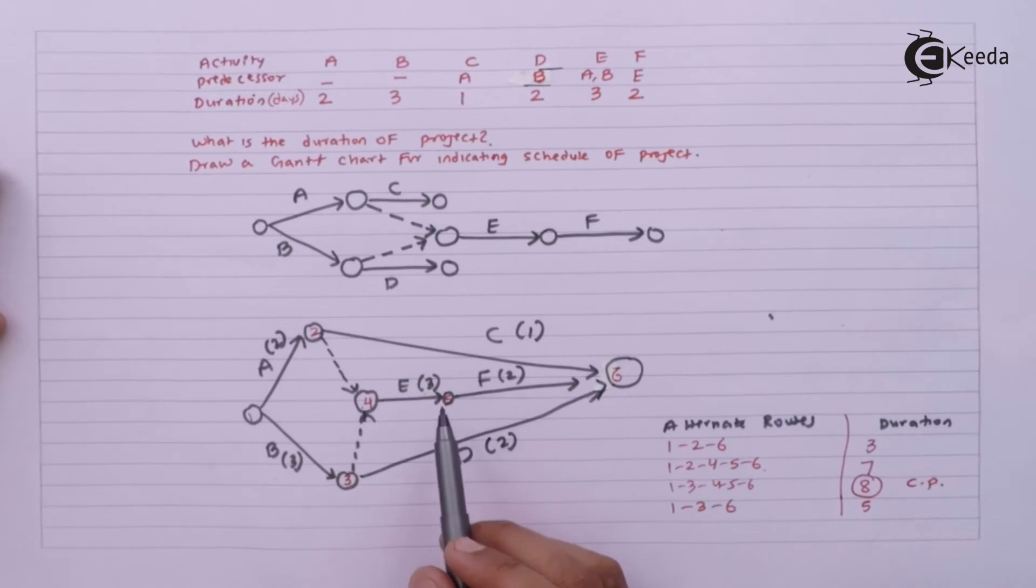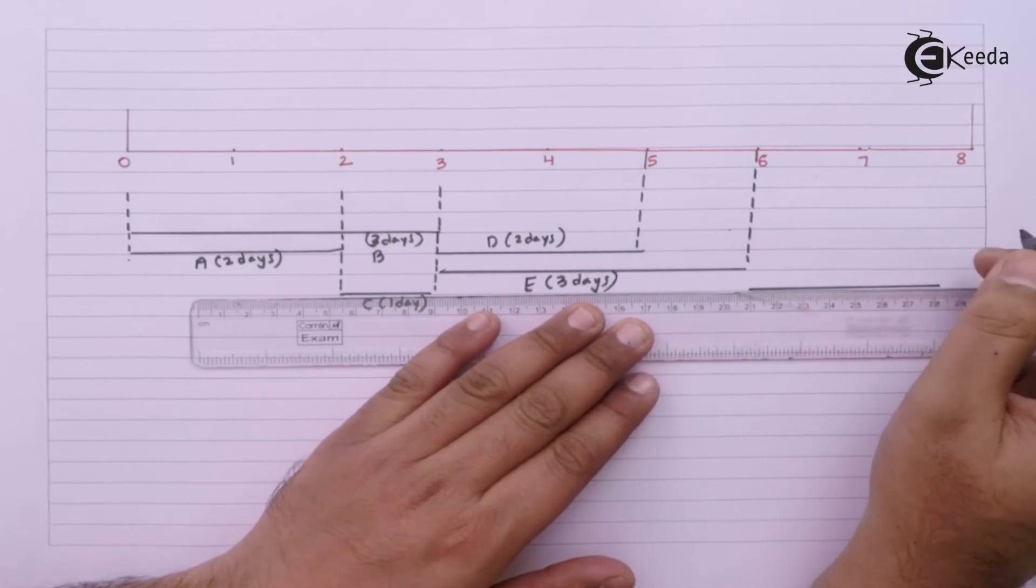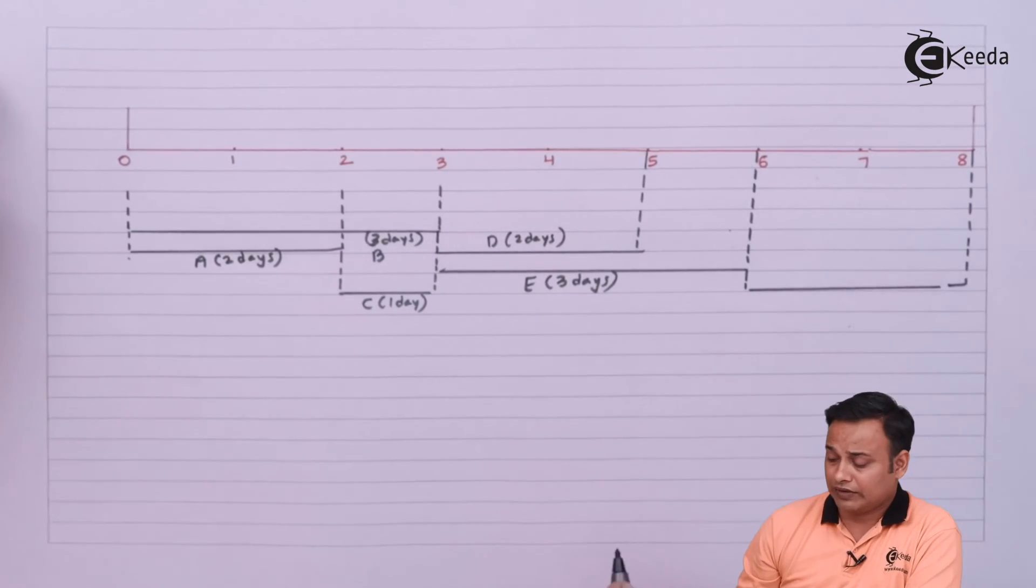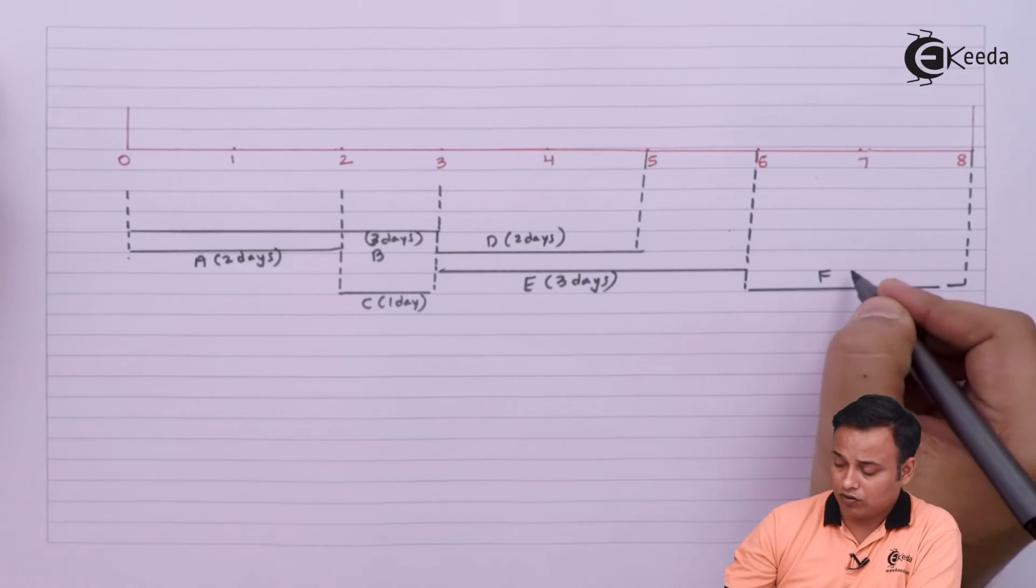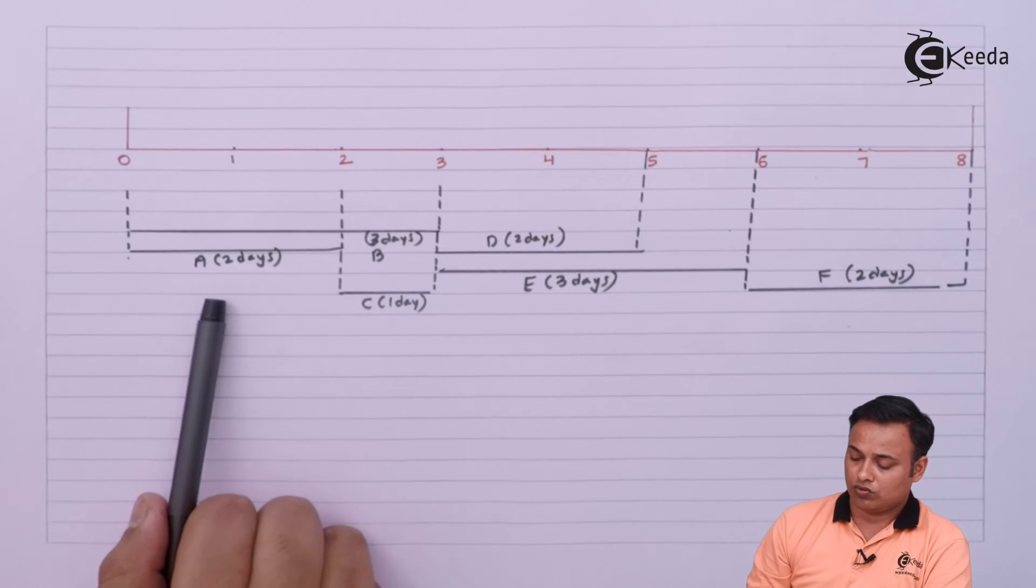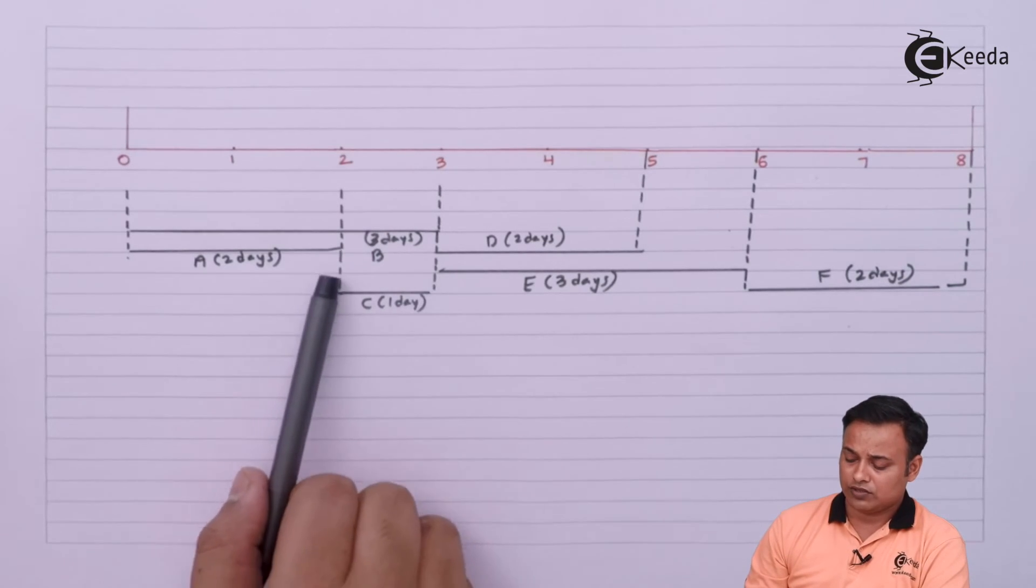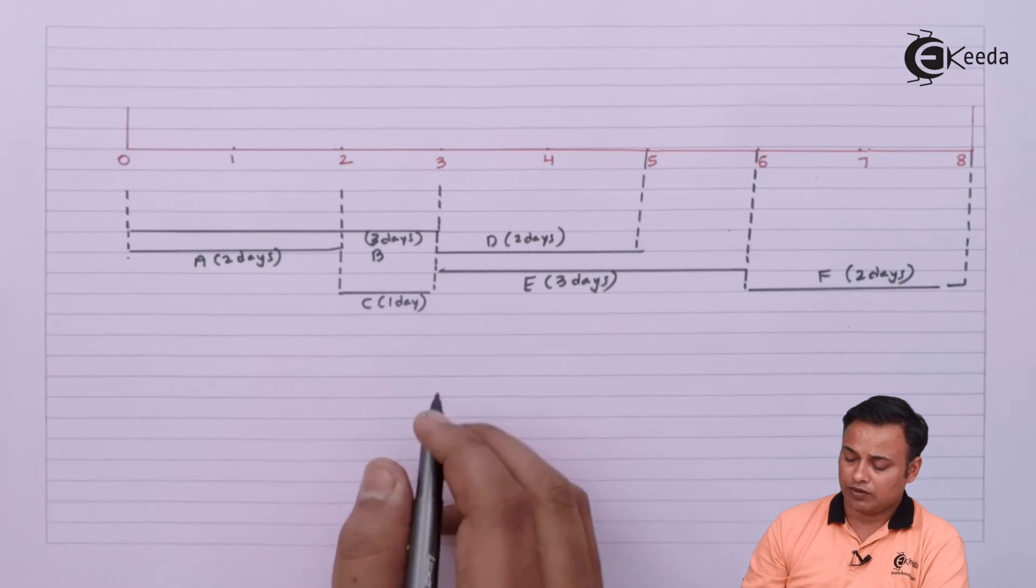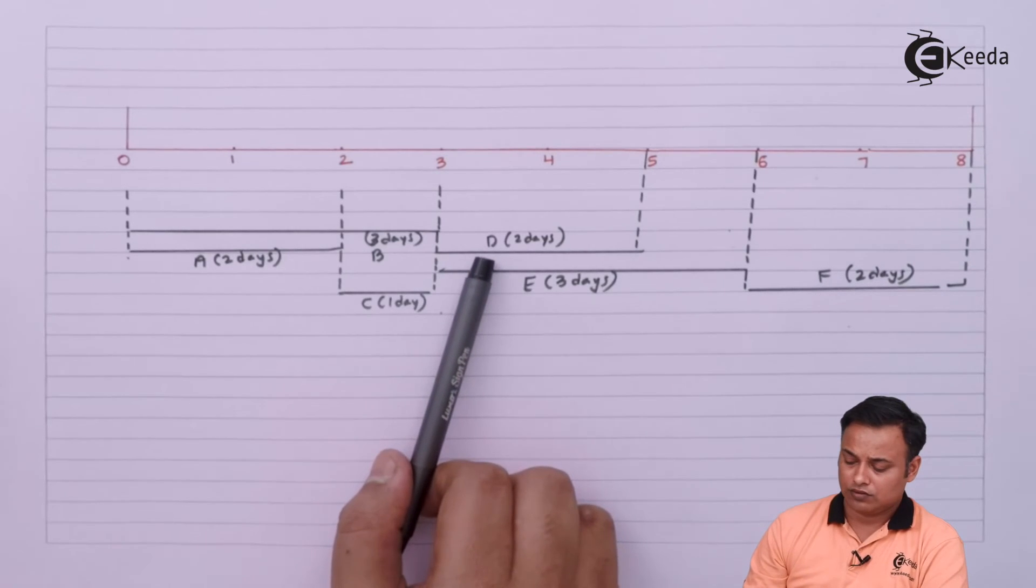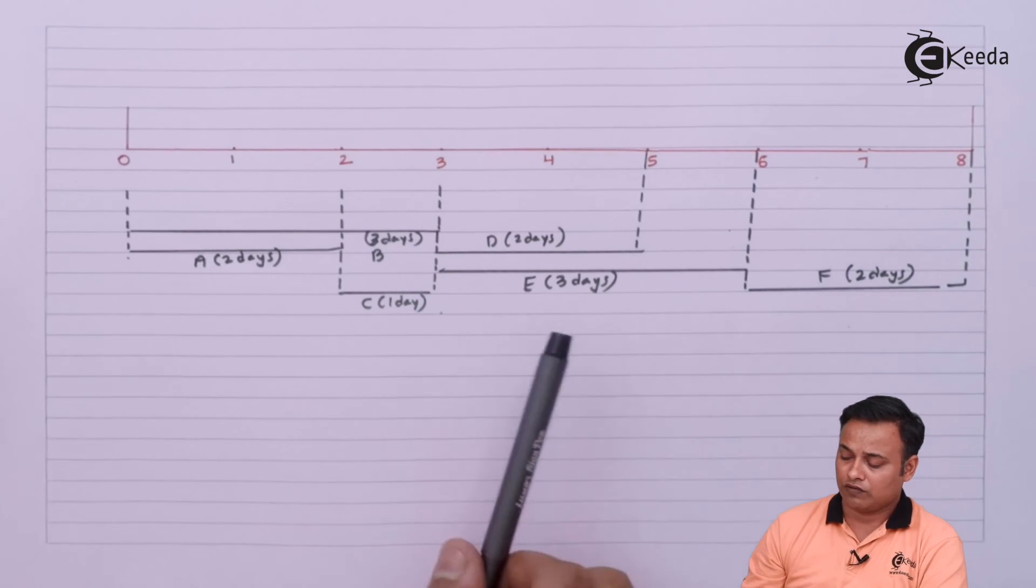Now F can start after completion of E. F can start after E for 2 days. So my final activity will be F for two days. At this point I am done with A, B, and C. Then I started with E for three days and then I started with F after completion of E for two days.